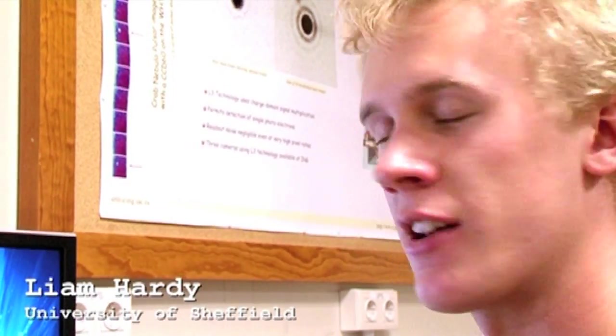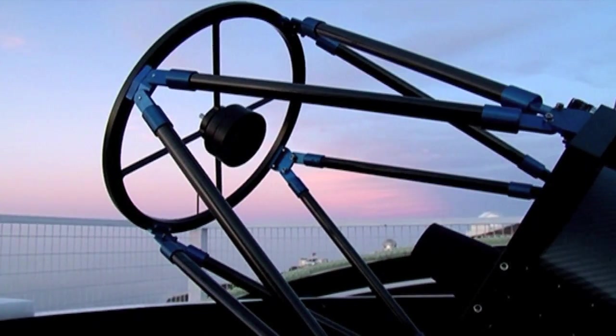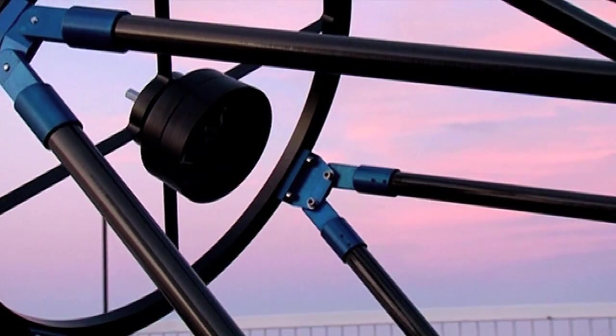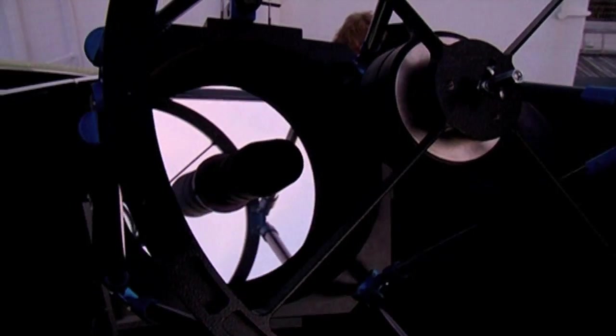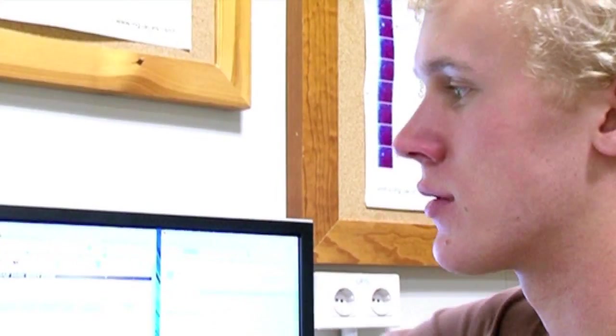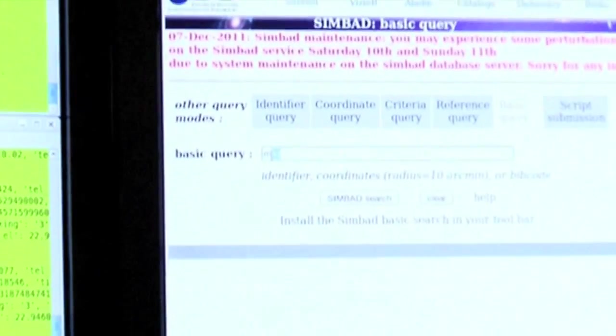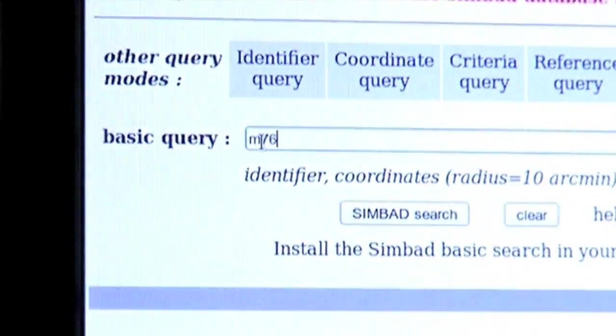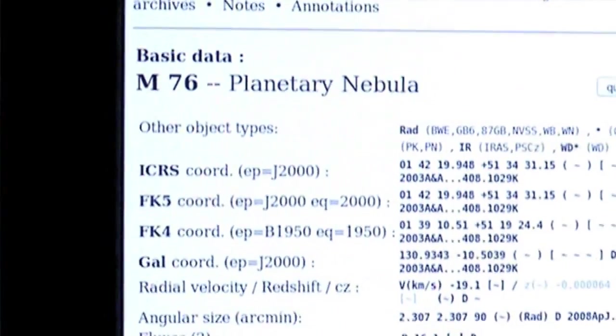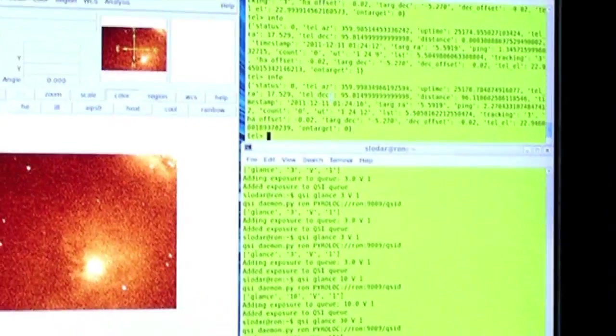Today we're hoping to observe the Little Dumbbell Nebula, that's M76, with the 0.5 meter telescope here on La Palma. It's the first time we've looked at anything more than just a star with this telescope, and it's difficult to orientate sometimes because the field of view is very small, only a few arc minutes. First of all I need to check the exact coordinates for M76 and tell the telescope where to point.